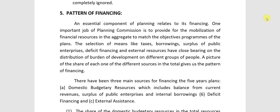The direction of means like tax, borrowing, surplus of public enterprises, deficit financing, and external resources have a close bearing on distribution of the burden of development on different groups of people. A picture of the share of each of these different resources in the total gives us the pattern of financing.